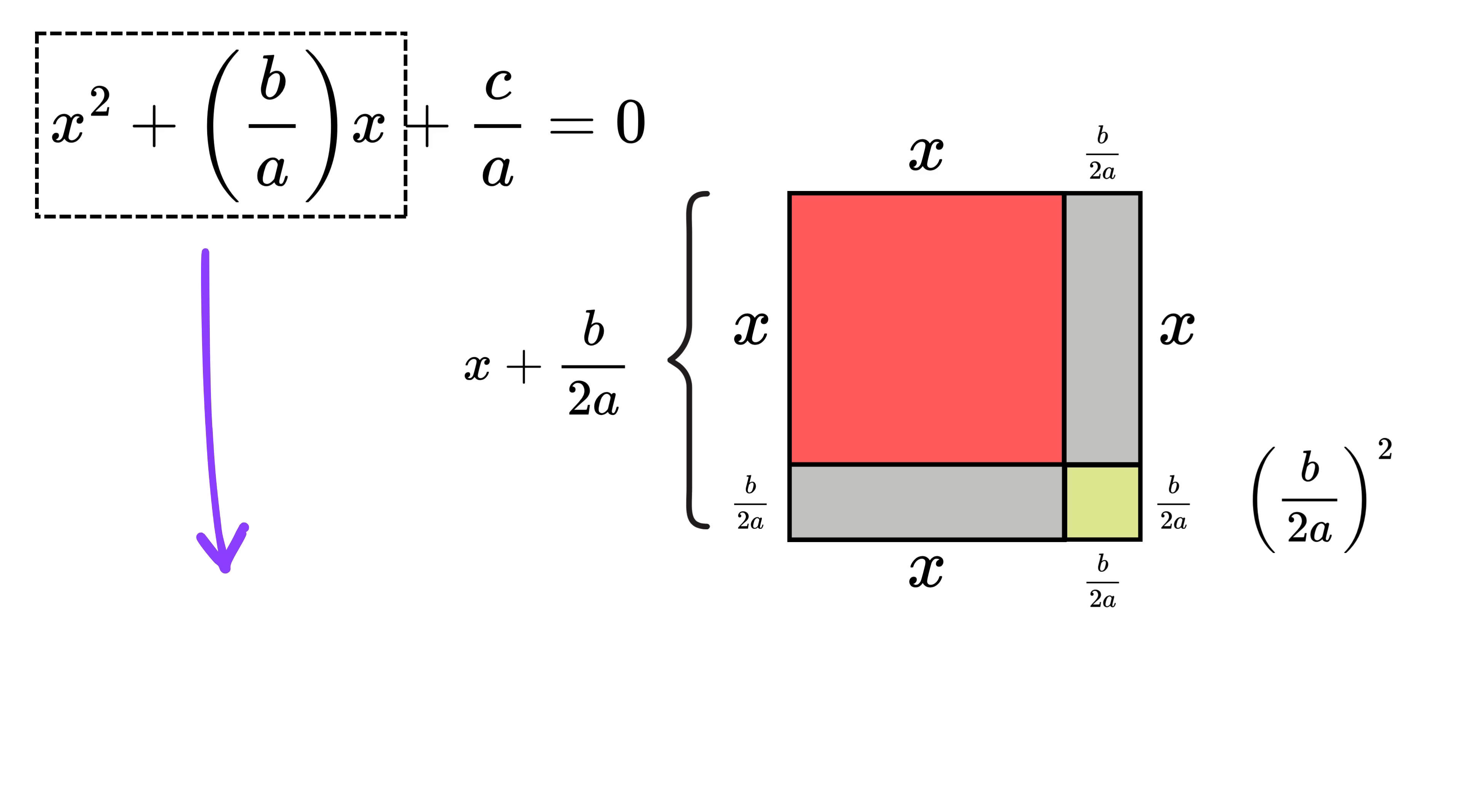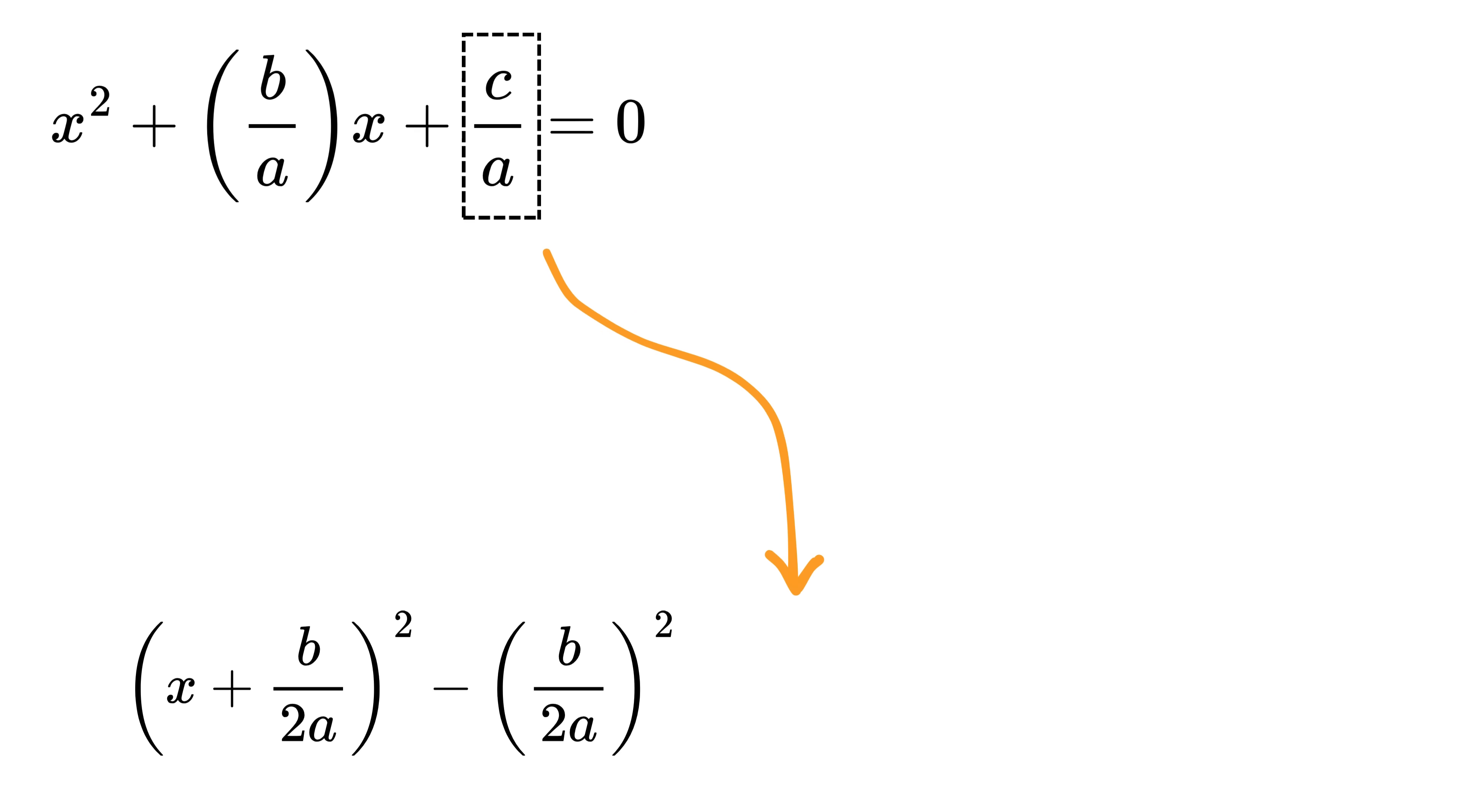So this part of the equation now becomes (x + b/2a)², which is the area of this new big square, and we subtract that extra little square area (b/2a)², and don't forget the +c/a from earlier. All of this equals zero. Now move the constant terms to the right side to isolate the perfect square.